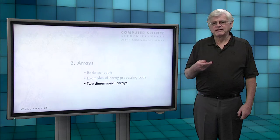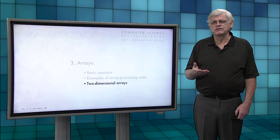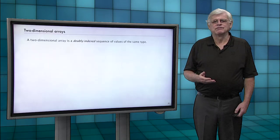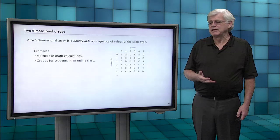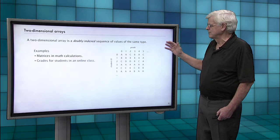Now we're going to take a look at a next level up of structuring data where we have two-dimensional arrays or arrays of arrays. A two-dimensional array is a doubly-indexed sequence of values of the same type. These are familiar if you've done math calculations with matrices, or if we have a table, say we have students and grades, then we have a two-dimensional array, two indices to access an element which would be a grade.